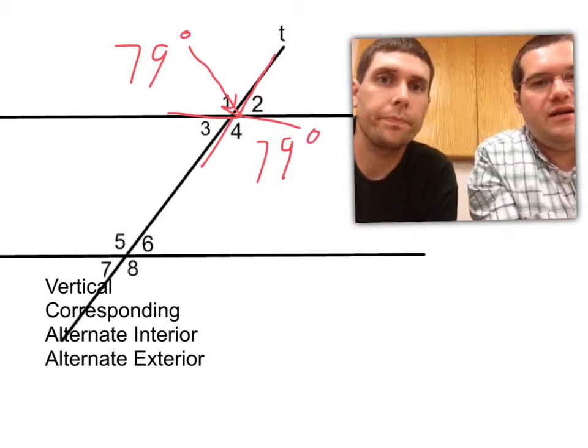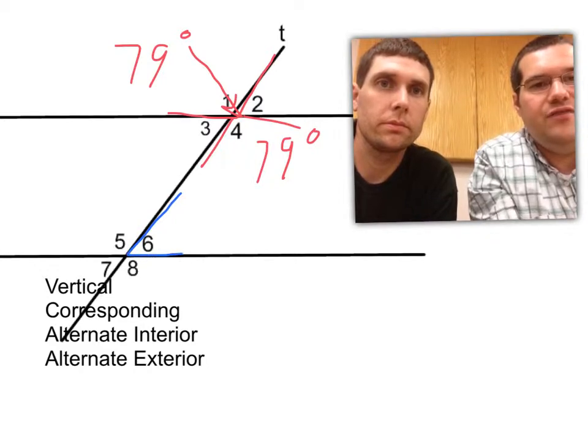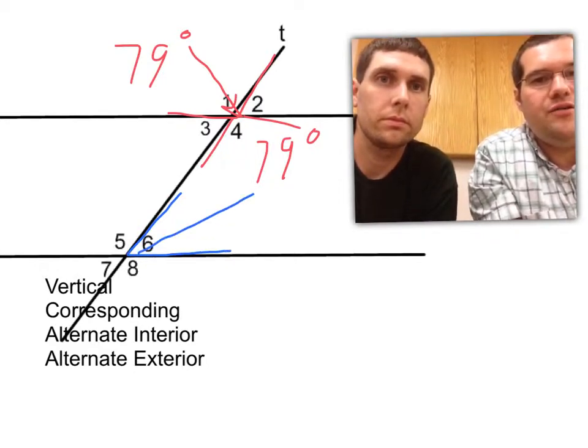And just to show you another one, let's take angle 6. See how it forms that kind of V for vertical. It points right to the other vertical angle, which would be angle 7.